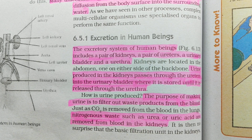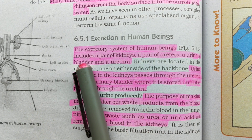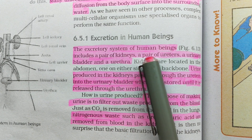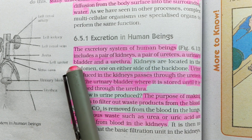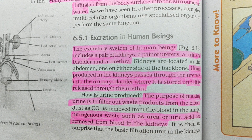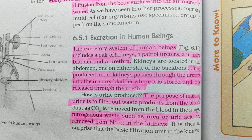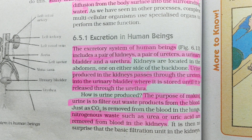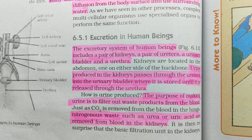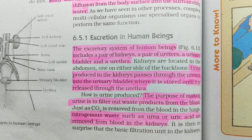The excretory system of a human being includes a pair of kidneys, a pair of ureters, a urinary bladder, and a urethra. To understand this paragraph properly, you need to understand the diagram — where the kidneys are, where the ureters are, where the urinary bladder and urethra are. You can pause this video or refer to your NCERT book to see where each structure is located and relate the diagram to the paragraph.